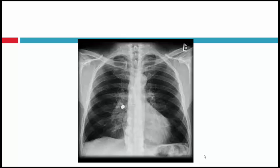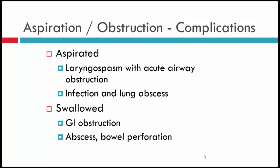In a nearly identical clinical case, a patient was discharged because coughing stopped, but appeared in the emergency room about a week later with an acute lung abscess — a crown visible as a foreign body in the right lung field. Complications from aspiration include laryngospasm with acute airway obstruction or lung abscess if unrecognized. If swallowed, most objects pass uneventfully depending on size and shape, but potential complications include GI obstruction, abscess, or bowel perforation.